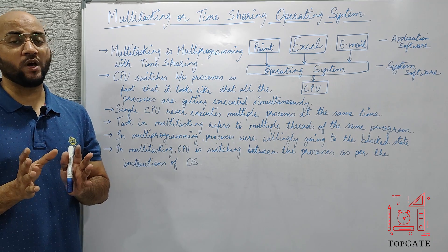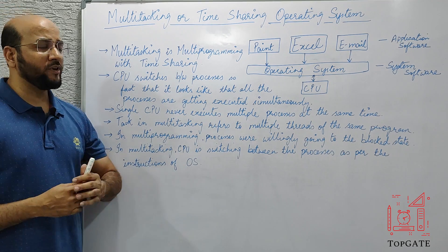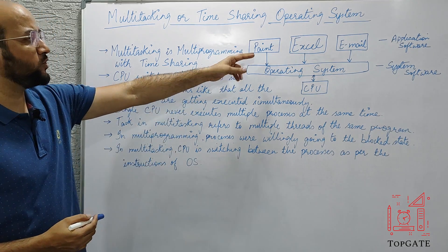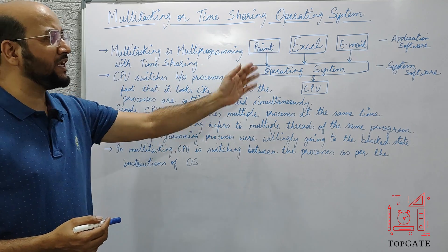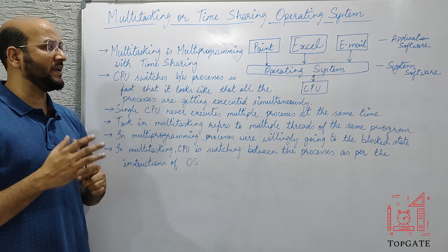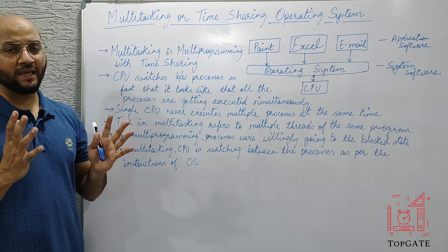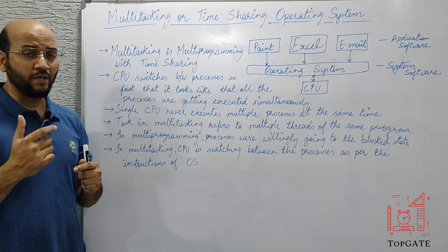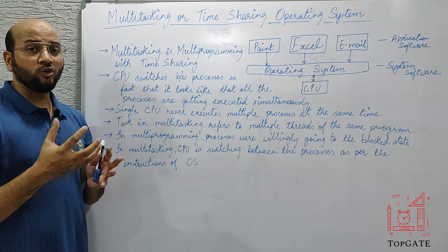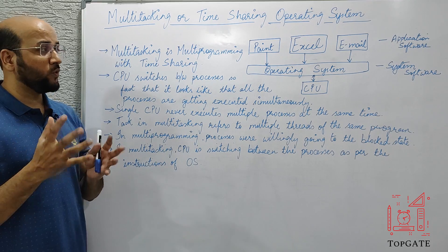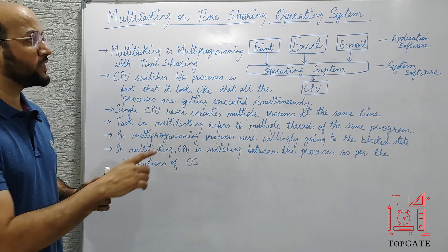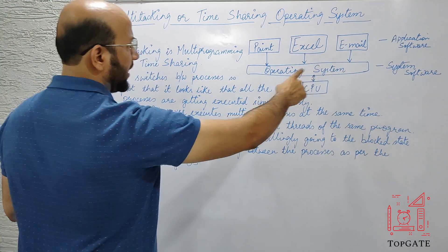For example, when you open your laptop you can use multiple programs simultaneously — Paint, Excel, email, a media player for music or movies — any number of applications at the same time. Using multiple applications simultaneously means you are requesting your operating system to execute more than one process at the same time. The OS will switch the context of the CPU from one process to another in their execution.